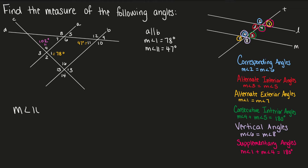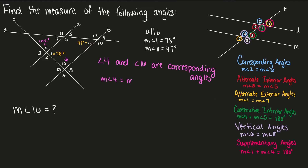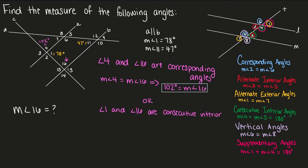Next, we need to find the measure of angle 16. Angle 4 and angle 16 are corresponding angles. Corresponding angles are congruent. Therefore, since angle 4 equals 102 degrees, angle 16 also equals 102 degrees. We can verify: angle 1 and angle 16 are consecutive interior angles, meaning angle 1 plus angle 16 equals 180 degrees. So angle 16 equals 180 minus angle 1, which again gives us 102 degrees.